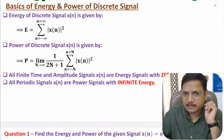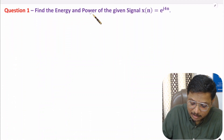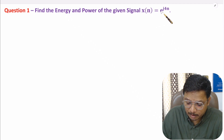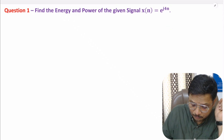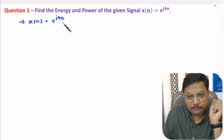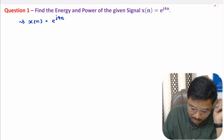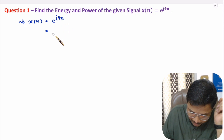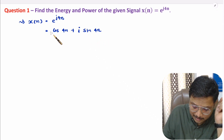Now I will solve the first example. In the first question, we need to identify the energy and power of signal x(n) = e^(j4n). We have x(n) = e^(j4n). This can be represented in the form of sine and cosine functions — e^(j4n) equals cos(4n) plus j·sin(4n). This is a periodic signal.